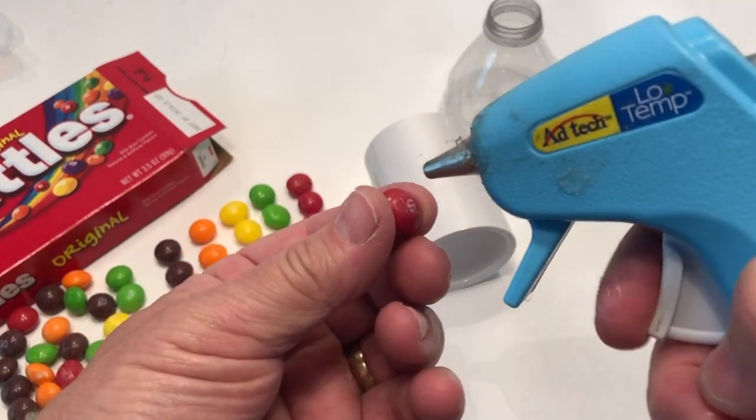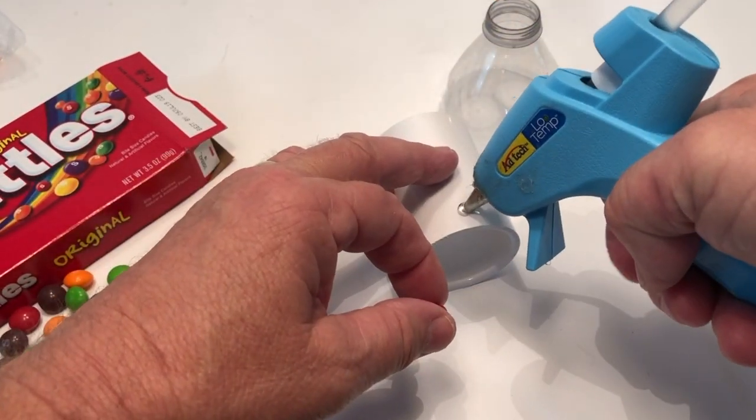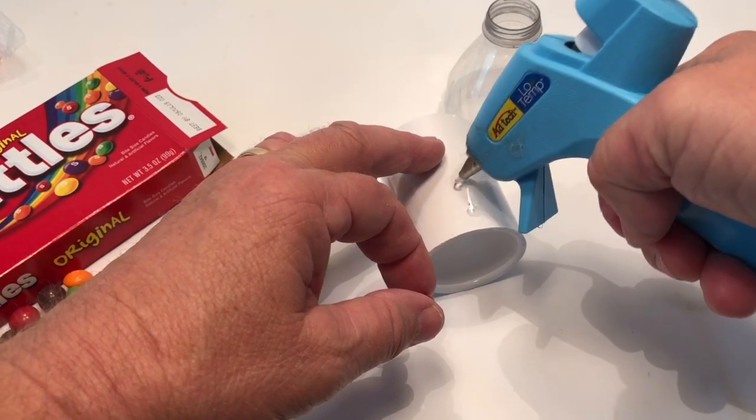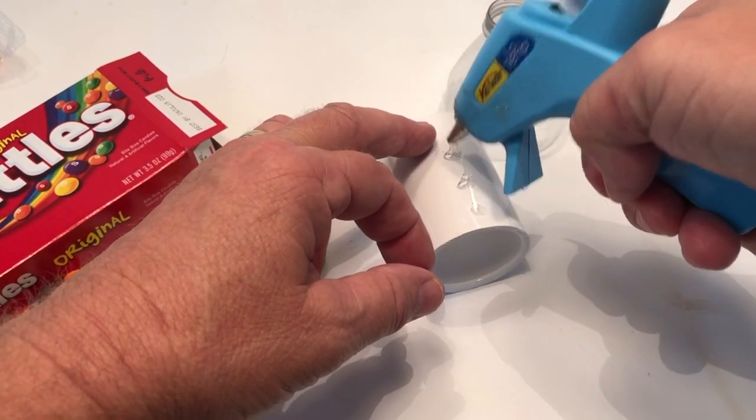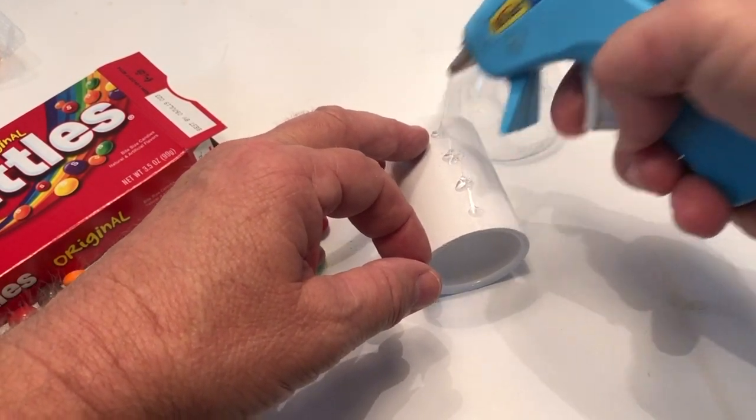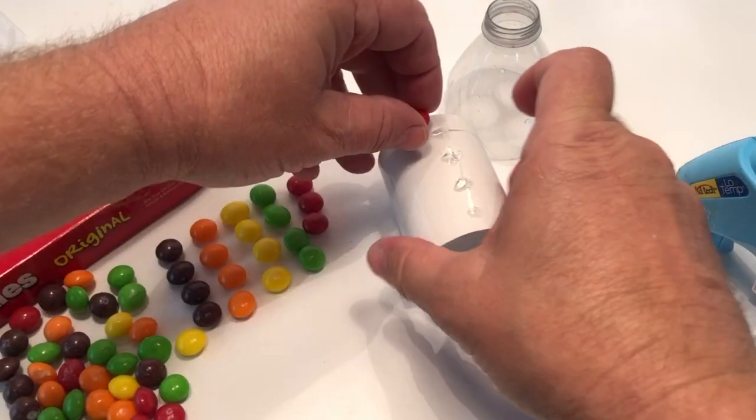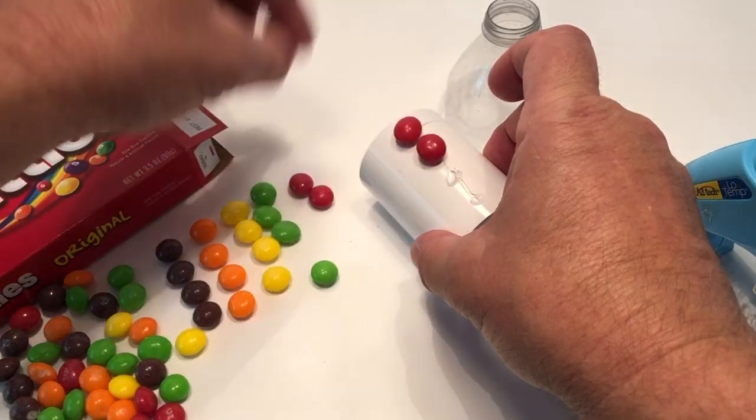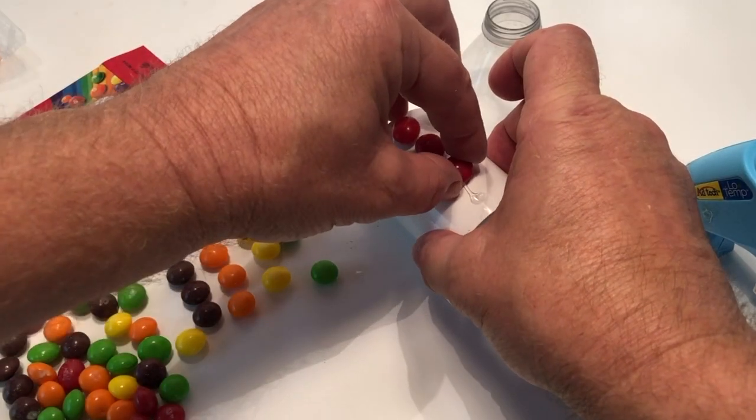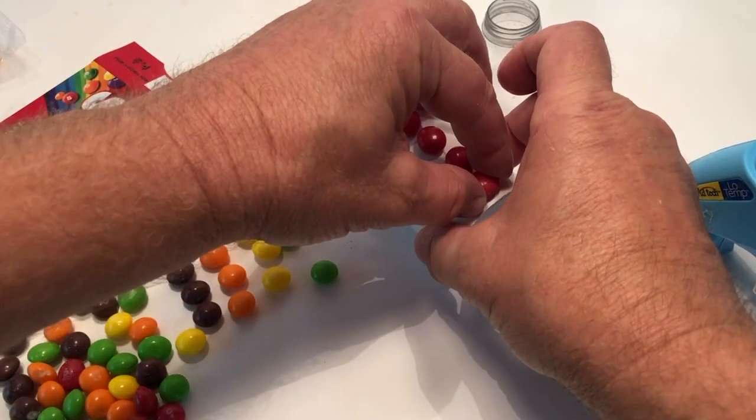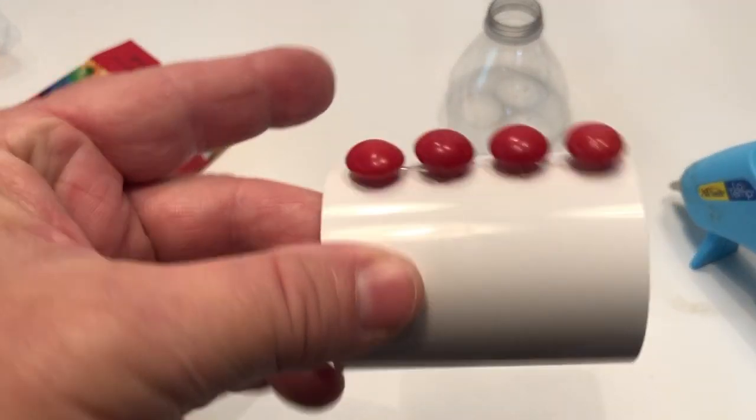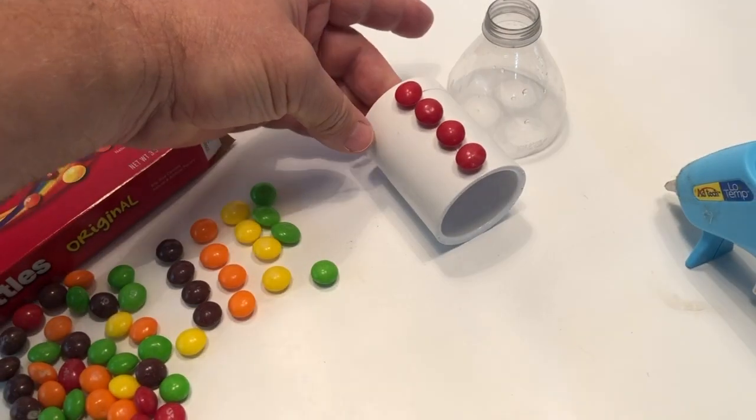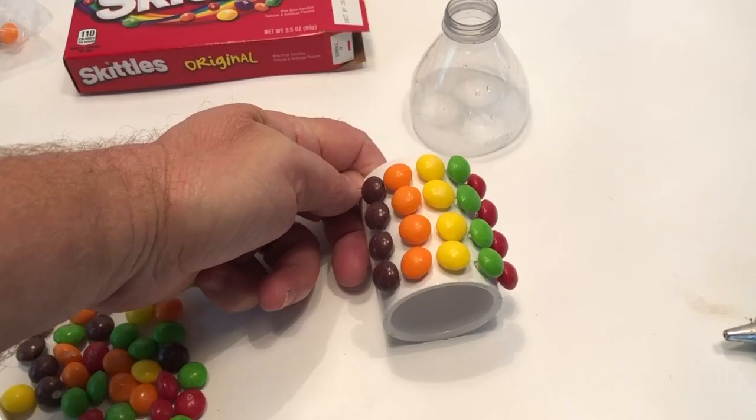Then you're going to take your Skittles and I'm just using a hot glue gun, so be careful here. A couple different ways you can do it. You can put the glue on the back of each Skittle, or like I'm doing here, just making four or five dots depending on how big your pipe is, and then placing your Skittles directly down the line. Now you could mix the colors, but since I'm doing a rainbow experiment, I want the same color to flow down the rainbow.